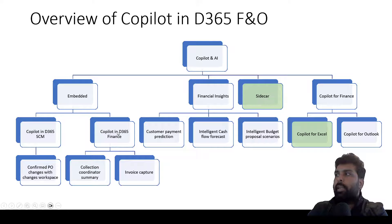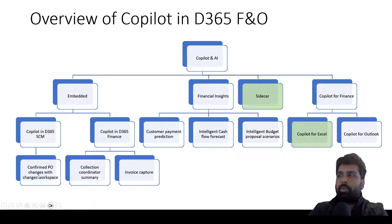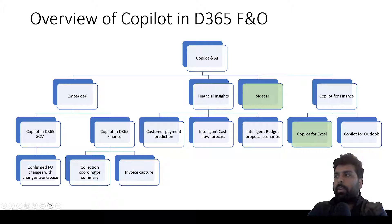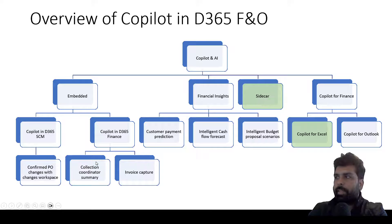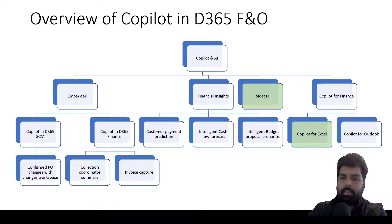Looking at some examples currently released by Microsoft: in the Supply Chain area there is a feature called Confirmed PO Changes with changes in workflow workspaces. In the Finance area, you may have heard of the Collections Coordinator Summary — a feature based on Copilot and AI. There is also the Invoice Capture feature, which covers complete invoice automation. I'm not going to cover these in today's video; we'll pick them up separately, but this gives you an idea of how it's categorized.